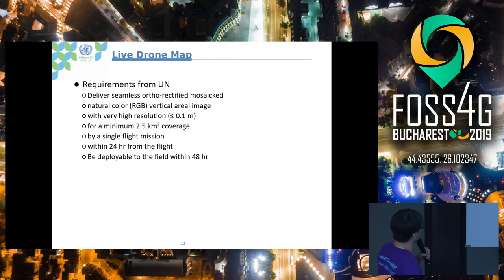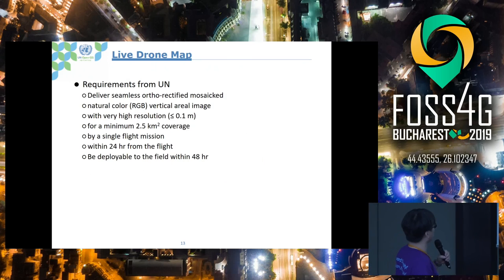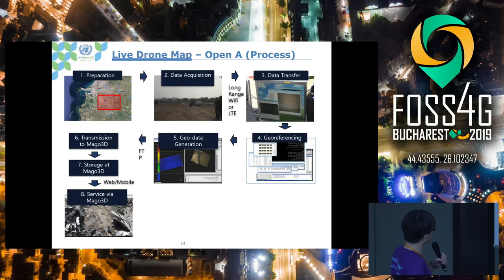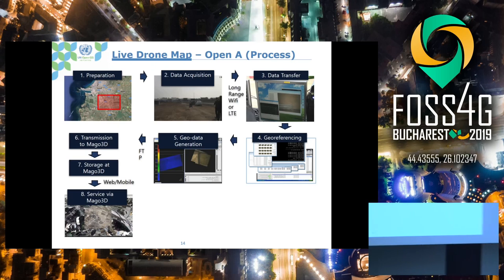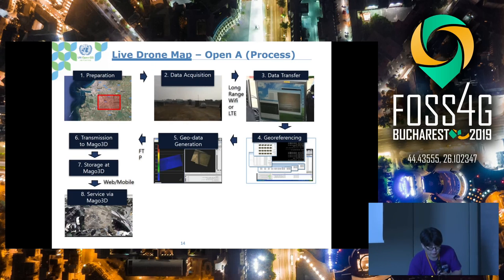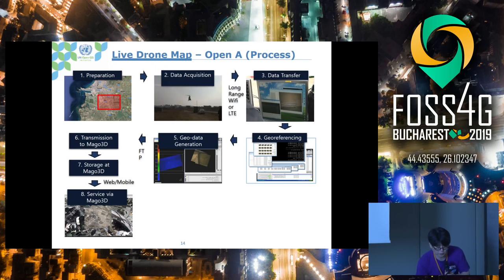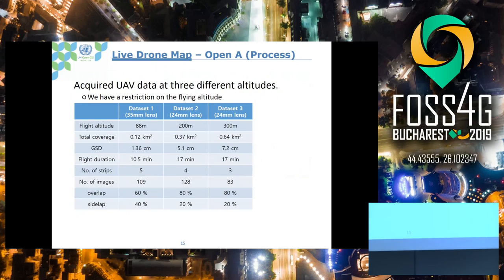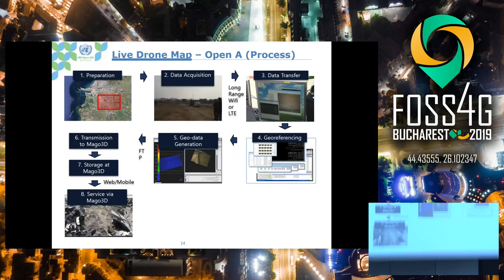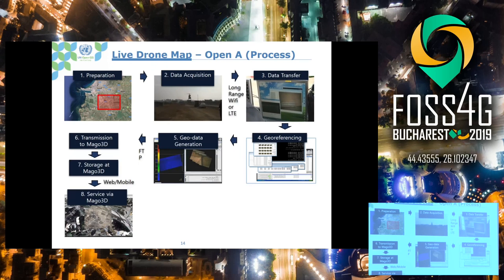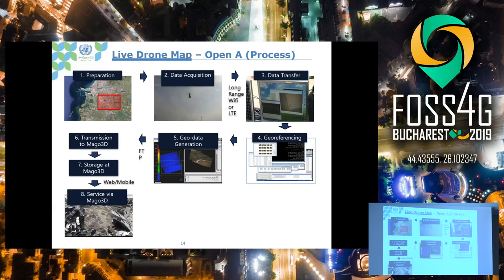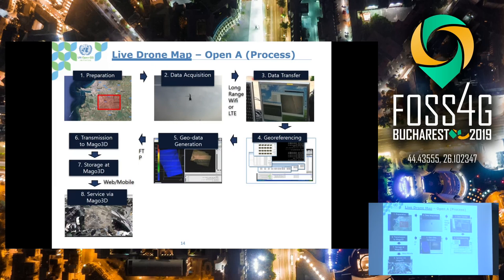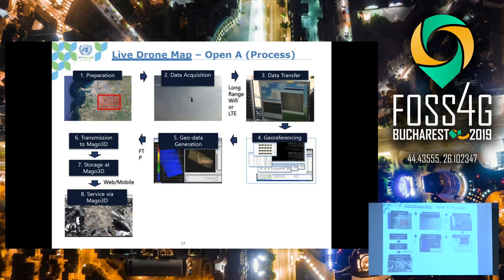This explains the whole process of the first option, the Live Drone Map. Once you prepare the region where you want to capture data, you launch the Live Drone Map. The drone sends images, which are processed on the ground, generating geo-rectified data that is sent to the geo-portal Mago 3D. This Mago 3D data is then shared anywhere in the world via a web browser. This is a very nice solution, though the quality was not perfect — but we can see what is going on in the field.